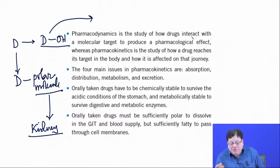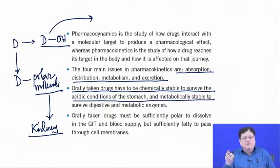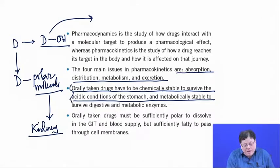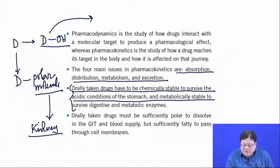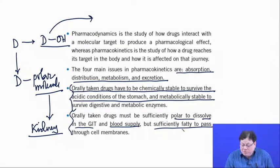Pharmacokinetics has four steps: absorption, distribution, metabolism, and excretion. Remember that the pharmaceutical test—surviving acidic conditions of the stomach—applies only to orally active drugs, not to intravenously administered drugs, which bypass that problem by being injected directly into the blood. Orally taken drugs must be sufficiently polar to dissolve in the GI tract and bloodstream, but sufficiently lipophilic to pass through the cell membranes.